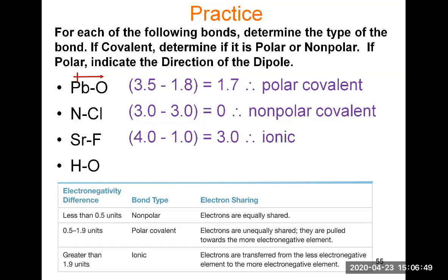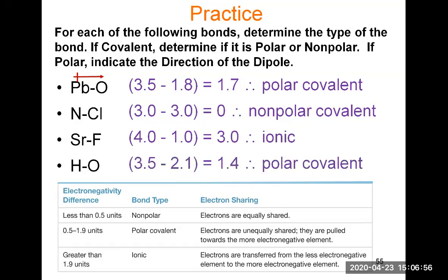For H-O: oxygen has a value of 3.5 and hydrogen is 2.1, a difference of 1.4. Since 1.4 is between 0.5 and 1.9, this is a polar covalent bond. A dipole arrow is needed, pointing towards oxygen, the more electronegative element, with the positive end pointing towards hydrogen.